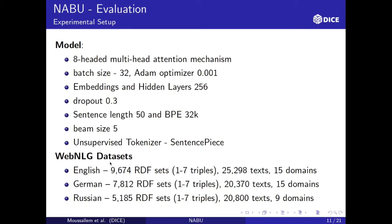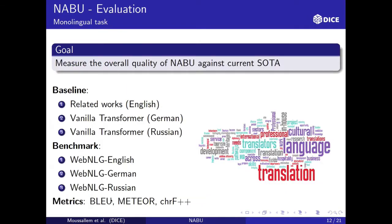As benchmarking datasets, we used the WebNLG datasets in English, German, and Russian versions. The first task — the monolingual task — measures the overall quality of NABU against the current state of the art. For English, the baselines are prior related works; for German and Russian, we had to create baselines since no previous work existed. We used the three datasets separately, relying on BLEU, METEOR, and chrF as automatic metrics.